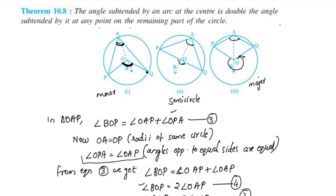BOQ is equal to angle OAQ plus OQ, and BOP is equal to angle OAP plus OP. It is very simple and easy to do. We will now do the exercise for 10.5.